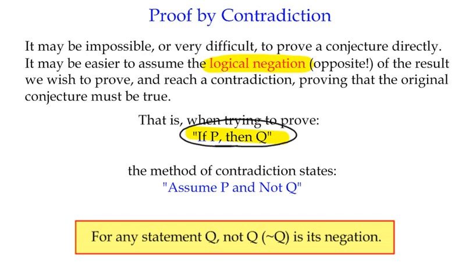What we're going to do with the contradiction is we're going to assume that the first statement is true, and we're going to expect the negation of Q, the opposite of Q to be true. As you can expect, that's where it's going to trip up because we're going to find that the opposite doesn't work, and that's a contradiction.